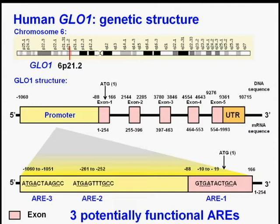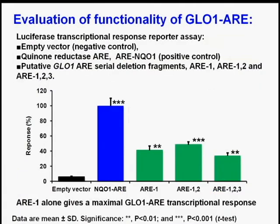When we analyzed the nucleotide sequence of the promoter region, we found that there were three potentially functional antioxidant response elements, AREs: one in exon 1, ARE1, and two further removed from the start codon. To investigate the functionality of these AREs in the glyoxalase 1 promoter region, we prepared luciferase reporter vectors by serial deletion fragment cloning so that we could assess the transcriptional response to an NRF2 activator.